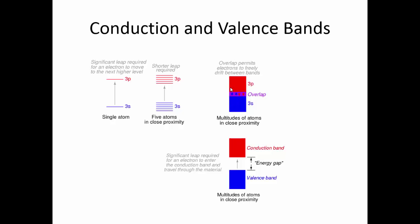At some energy level above the valence band is the conduction band — the band of energy in which electrons are free to move around, no longer bound to the atom, and able to allow conduction to occur. The amount of energy between the valence band and the conduction band determines how good of a conductor a substance is. For conductors, the valence band and the conduction band overlap. For poor conductors, there is a gap that electrons must overcome to move into the conduction band.